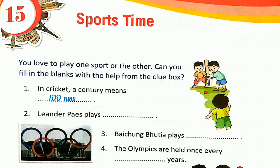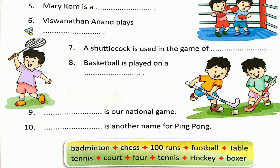Number 2: Leander Paes plays tennis. Number 3: Baichung Bhutia plays football. Number 4: The Olympics are held once every four years. Number 5: Mary Kom is a boxer. Number 6: Vishwanath Anand plays chess.